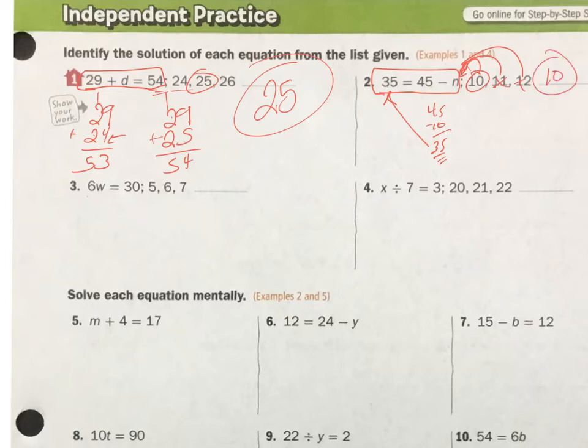Number 3. My equation is 6w equals 30. 6 times something is going to be 30. Well, 6 times 5 is 30. 6 times 6 is 36. 6 times 7 is 42. If I put this 5 in here, this is the one that's going to get me 30. So the answer is 5.